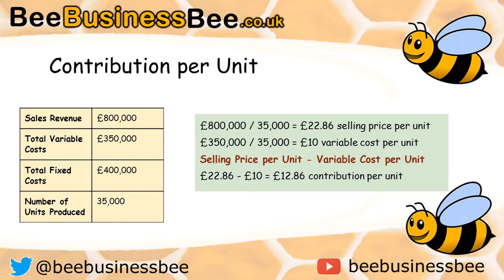I've calculated the variable cost per unit and the selling price per unit first. Sales revenue of £800,000 divided by 35,000 units gives an average selling price of £22.86, with some rounding involved. The variable cost per unit is £350,000 divided by 35,000, which gives £10 variable cost per unit. Selling price per unit of £22.86 minus £10 variable cost gives £12.86 contribution per unit, with minor inaccuracies due to rounding.